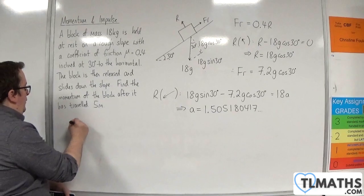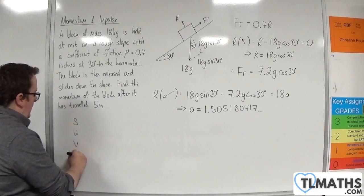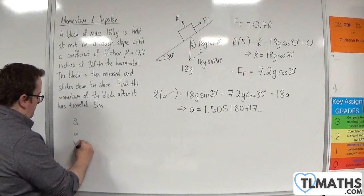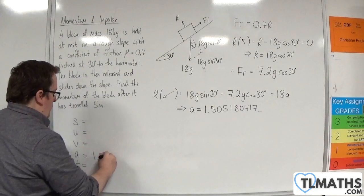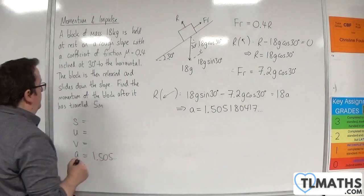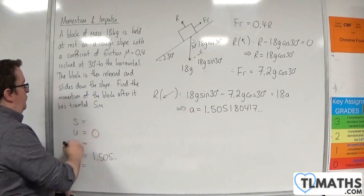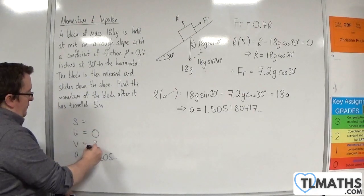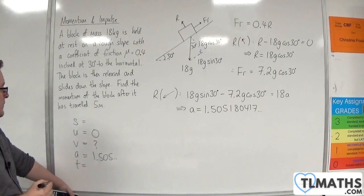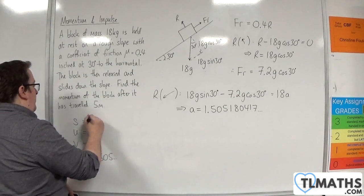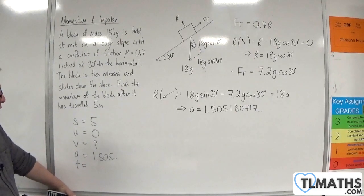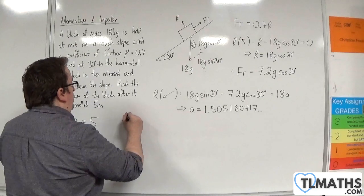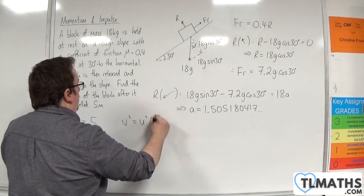So now I'm going to use the constant acceleration formulae, SUVAT equations. So a is this 1.505, etc. It is released from rest. I need to find the final velocity. And it has travelled 5 metres down the slope. So I want to use the equation that doesn't involve t, which is v squared equals u squared plus 2as.